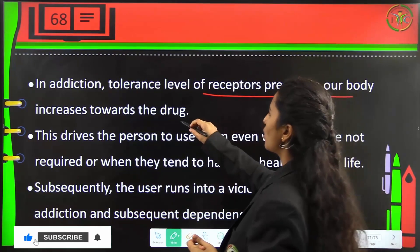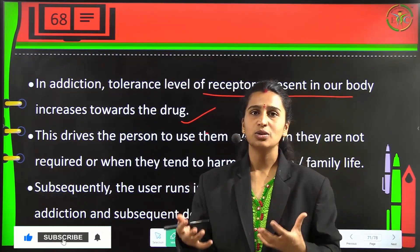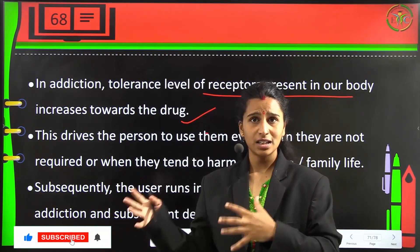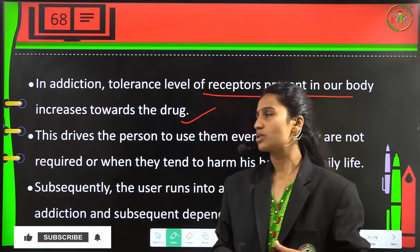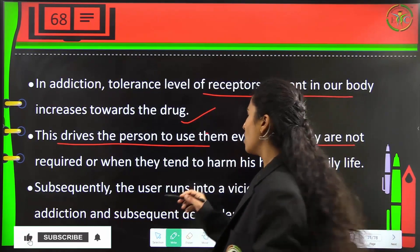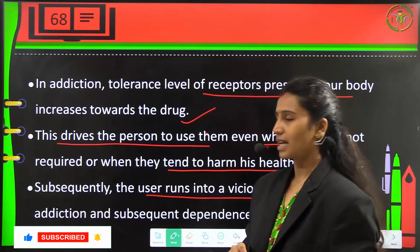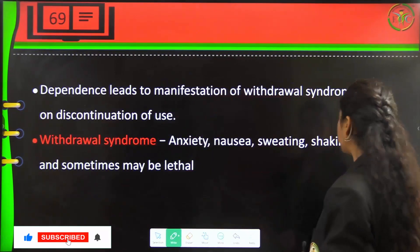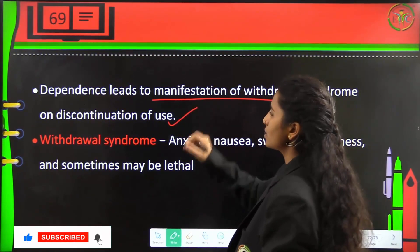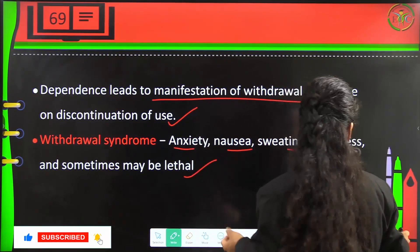In addiction, the tolerance level of the receptors in the body increases toward that substance. This drives the person to use them even when not required or when doing so harms their health or family life. The user runs into a vicious cycle of addiction and dependence. Dependence leads to withdrawal syndrome upon discontinuation — symptoms include anxiety, nausea, sweating, shakiness, and sometimes even lethal consequences.